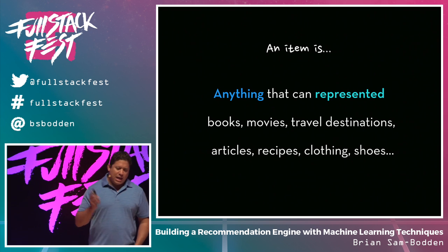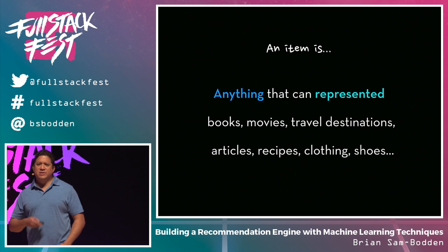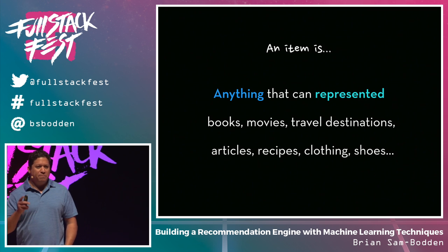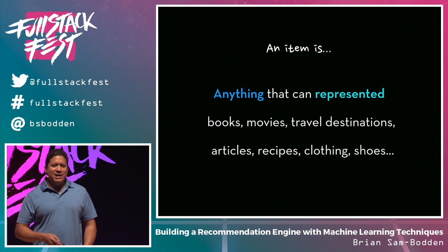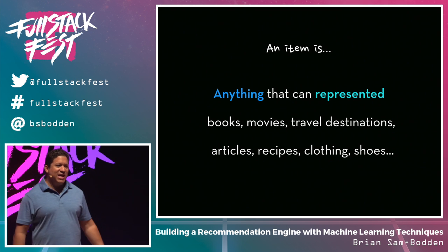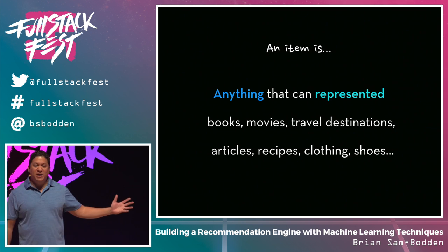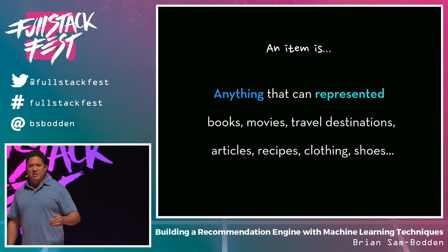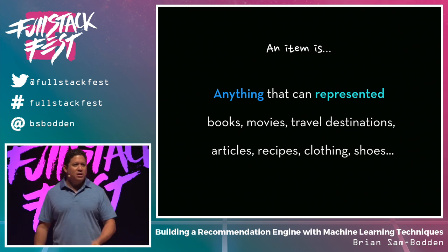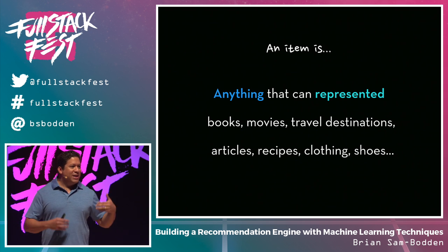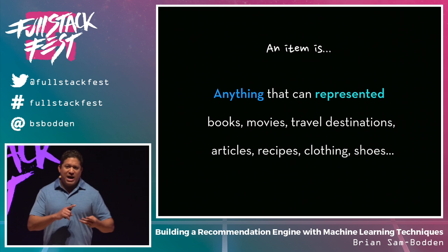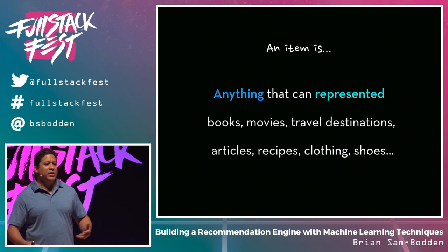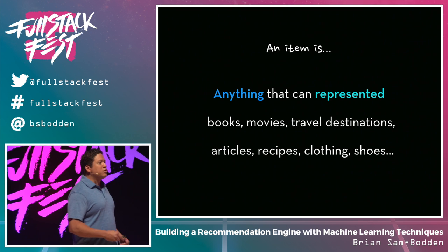An item can be anything: a book, a movie, a travel destination, articles, recipes, clothing. One great example of combating the paradox of choice is services that tailor a fashion persona to yourself and send you an outfit every month. My wife loves one of these. Whatever you return becomes basically unlikes in your profile, so they can mine that information to figure out what other users are like you in terms of body type, style, and demographics, and use that to recommend different ensembles.